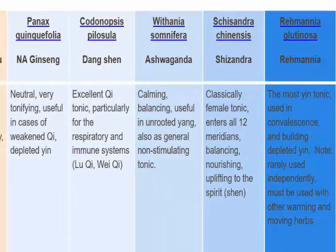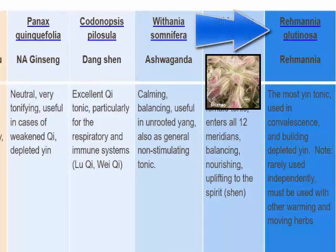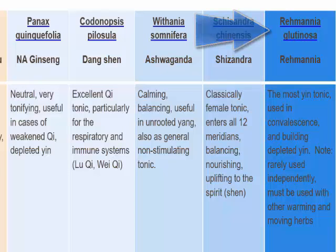On the other side, we've got Rehmannia glutinosa, also a TCM herb. We've got our most yin herb. It's a root, slow-cooked in wine for a long time, very sweet — one of the few herbs you can actually eat, and it's quite tasty.